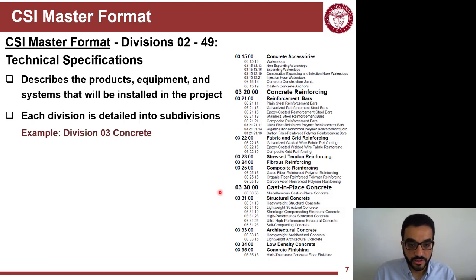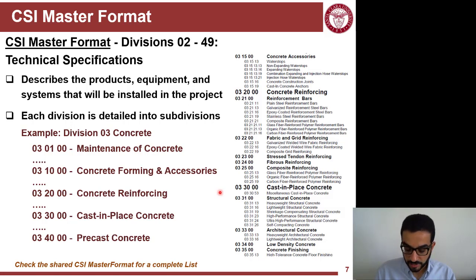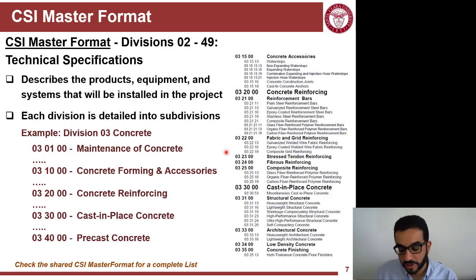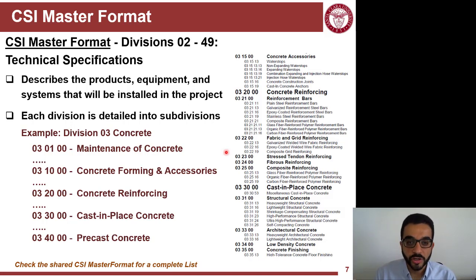Division 3 as a whole covers everything about concrete. I will post on the course website a sample of the CSI Master Format. It's many pages, but it serves as a template to organize specifications for a generic construction project. It doesn't give you the actual text within each division and subdivision, but it tells you how people expect you to organize your specifications.